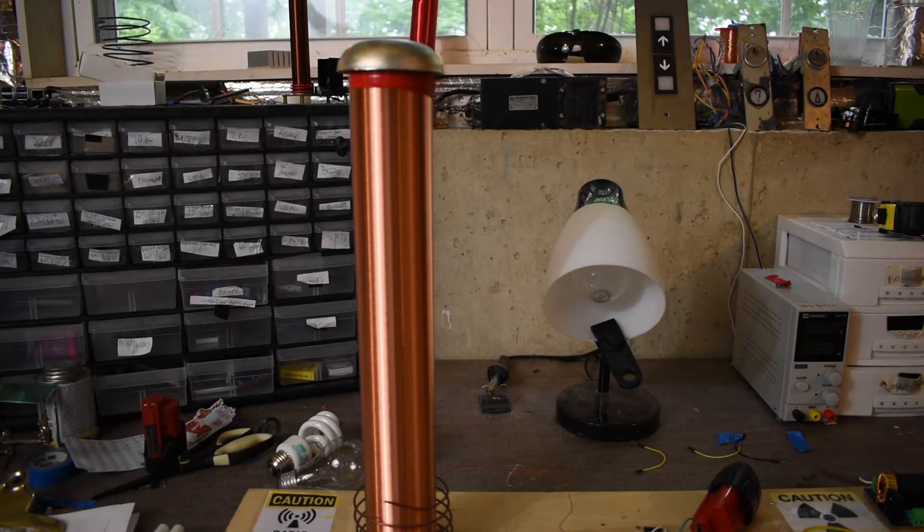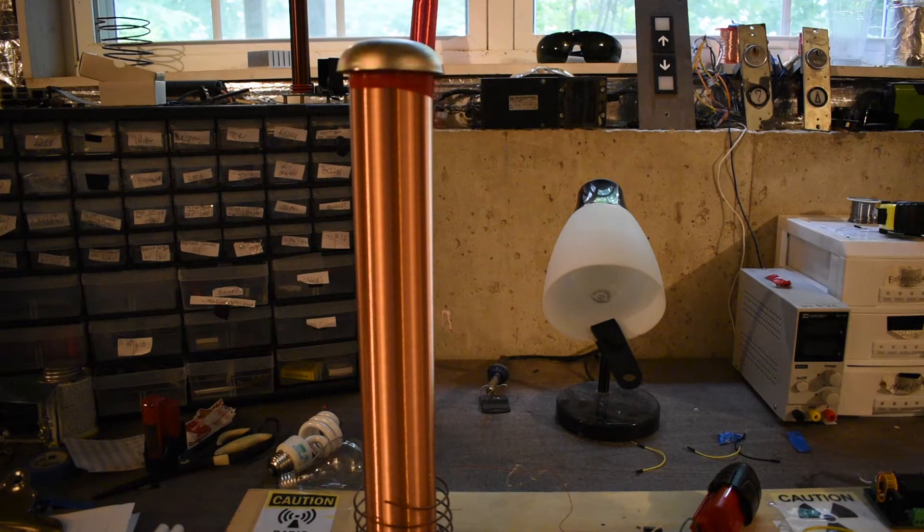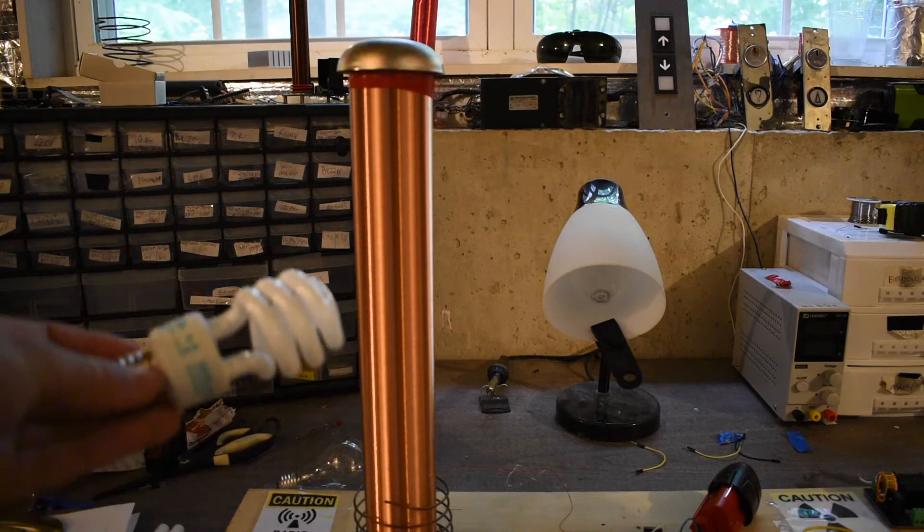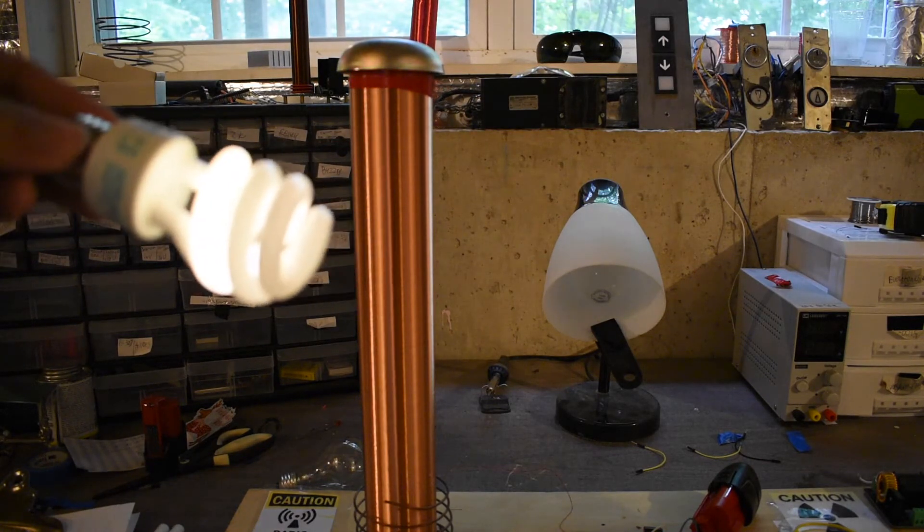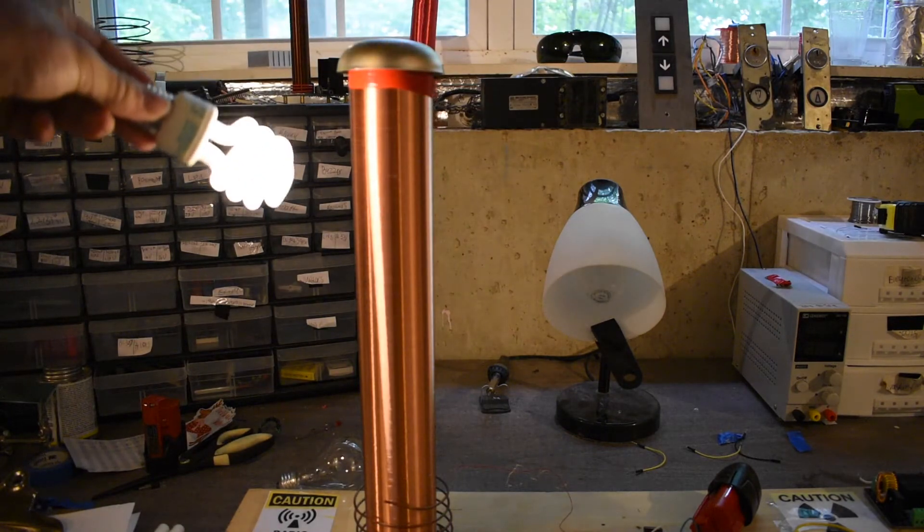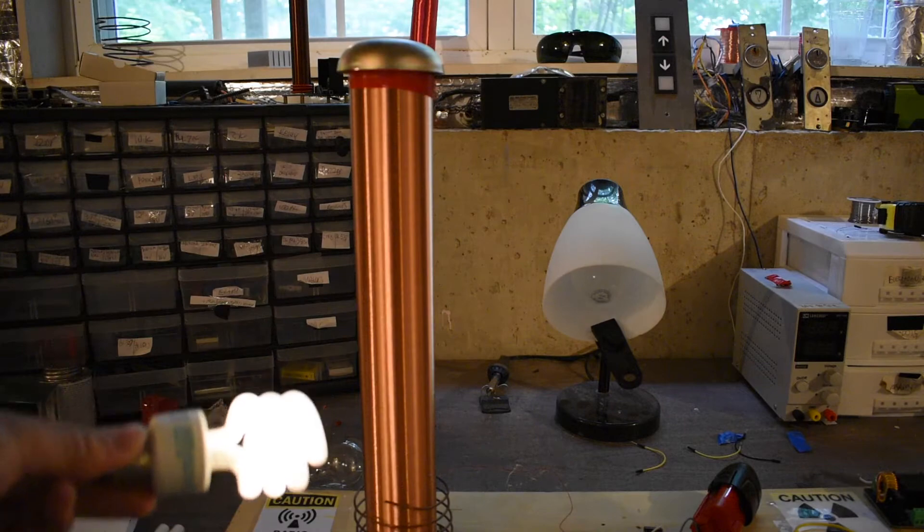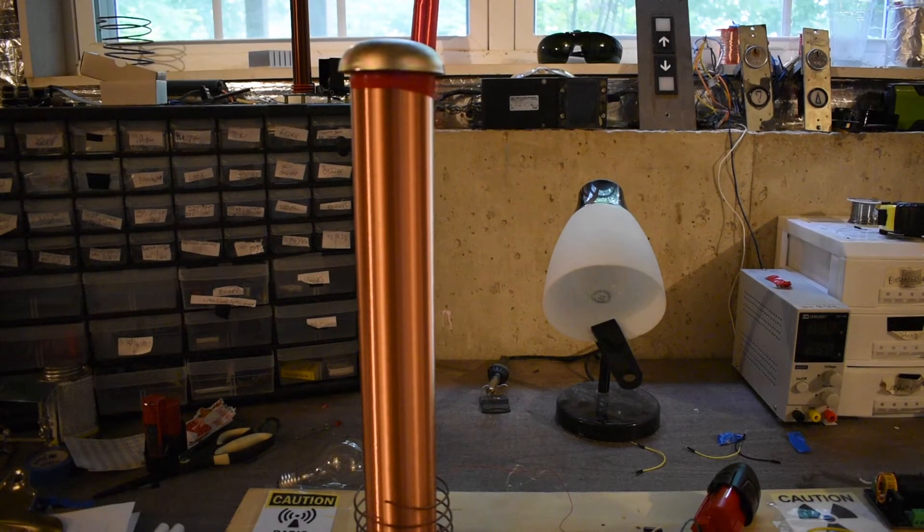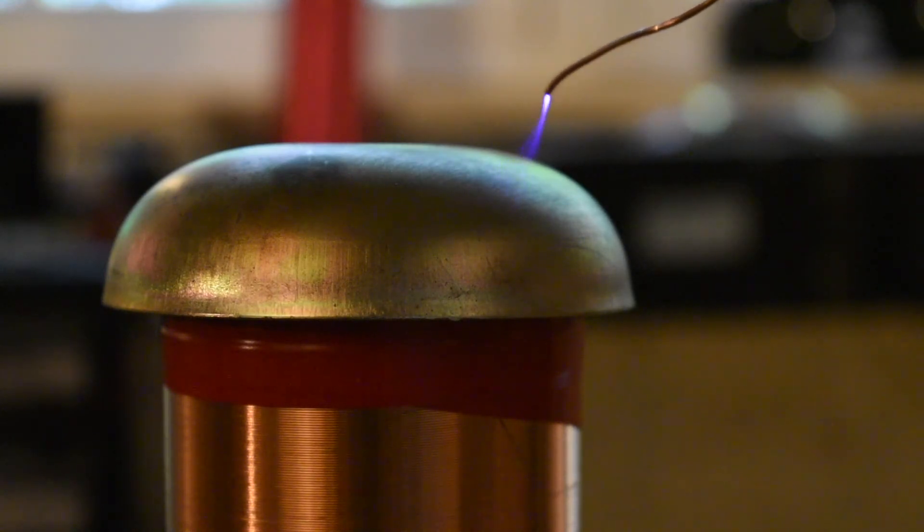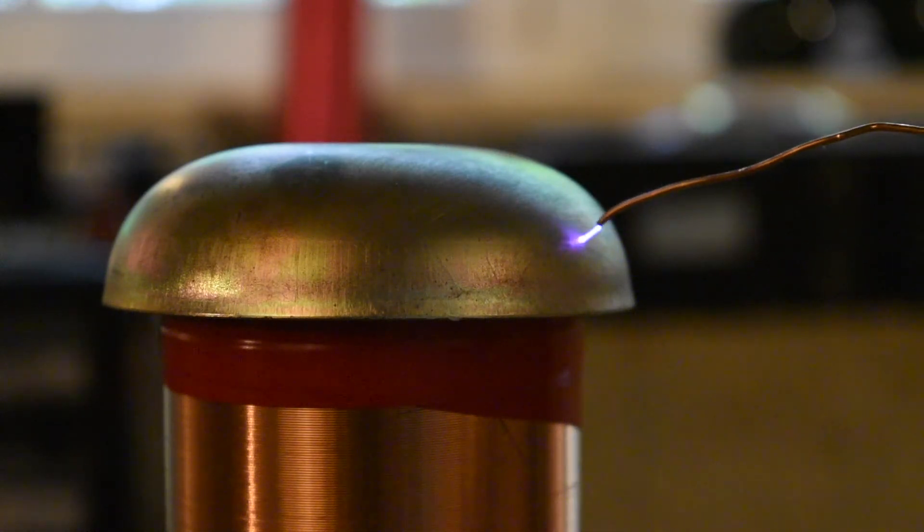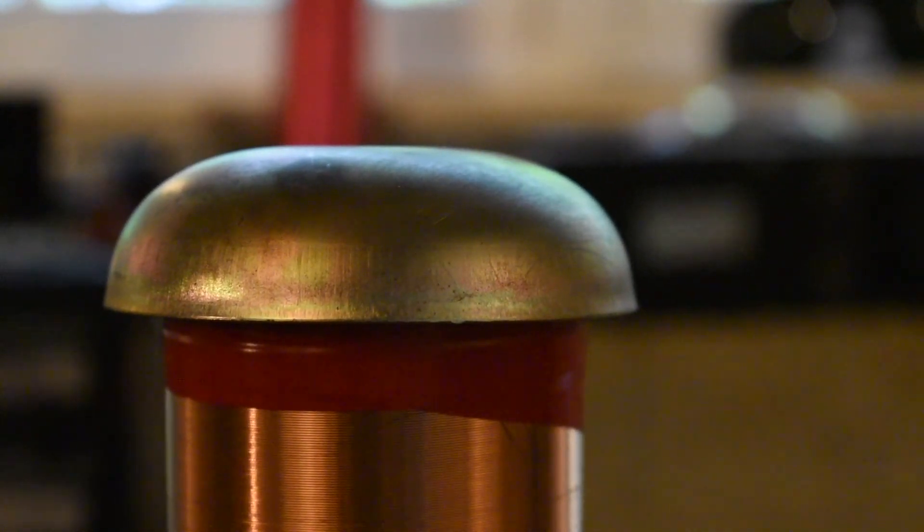First grab any old fluorescent or neon light bulb, flip the switch and hold it up to it. Amazing isn't it? Here's something pretty cool, when you run the Tesla coil and you put a wire up to the top load here, pull an arc off of it.